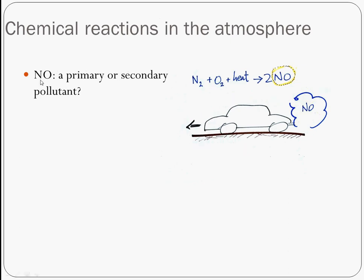Here's a quiz question: is nitrogen oxide a primary or secondary pollutant? Nitrogen makes up about 78% of the atmosphere and oxygen about 21%. When both run through a very hot engine, nitrogen oxide gets emitted from the tailpipe. So is it primary or secondary? It's a primary pollutant — it's coming right out of the tailpipe.